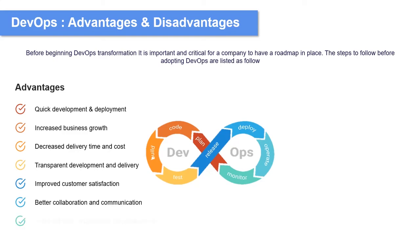The last advantage is improved team engagement and productivity. DevOps encourages collective responsibility — everybody involved in a project is responsible, and this leads to better team engagement. When you feel responsible, that gives you the energy to be engaged, and when you are engaged into something and want it to work, it will definitely improve your productivity as well.